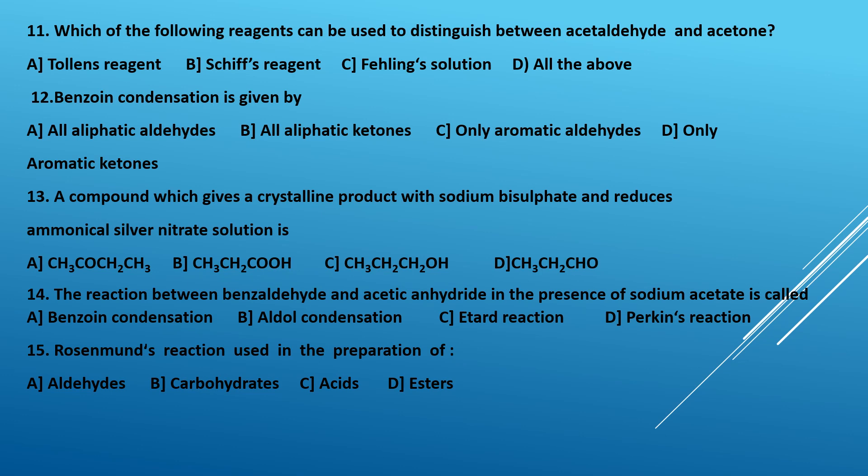Twelfth question: benzoin condensation is given by — A, all aliphatic aldehydes; B, all aliphatic ketones; C, only aromatic aldehydes; D, only aromatic ketones. Benzoin condensation is given by only aromatic aldehydes, for example C₆H₅CHO (benzaldehyde). So the correct answer is C.